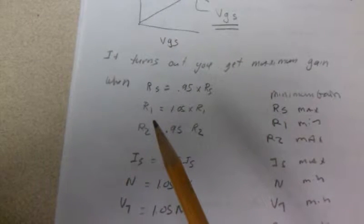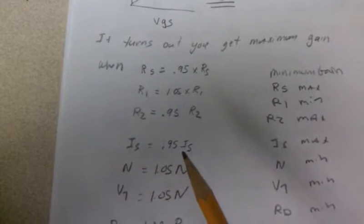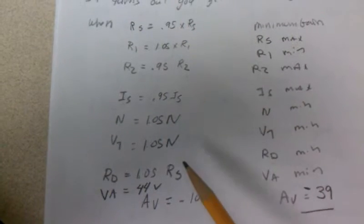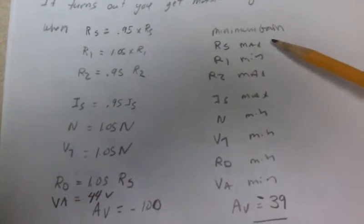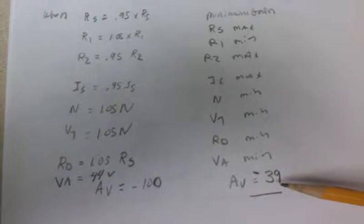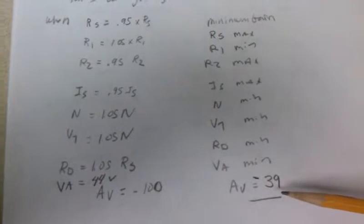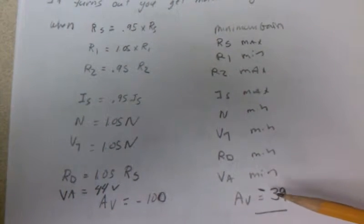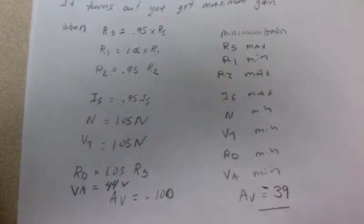After going through and making some intelligent decisions, I can find that the maximum gain is when RS is at a minimum, R1 is at a maximum, R2 is at a minimum, IS is at a minimum, N and VT are a max, RD is max, and VA is at a max. You can get about minus 100 if all of these conditions happened. You get the minimum gain by reversing every relationship over there and your drain gain can actually drop to minus 39, meaning you could design your circuit, pull the parts out of the box, and you might see a gain of 100 or a gain of 39 and your design would still be considered working.